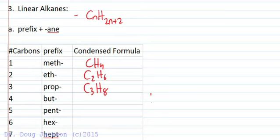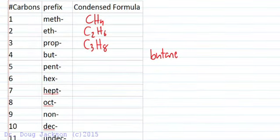So for example, with four carbons, we would have butane, not tetraane. Different set of prefixes here. So let's look at the whole list of them.